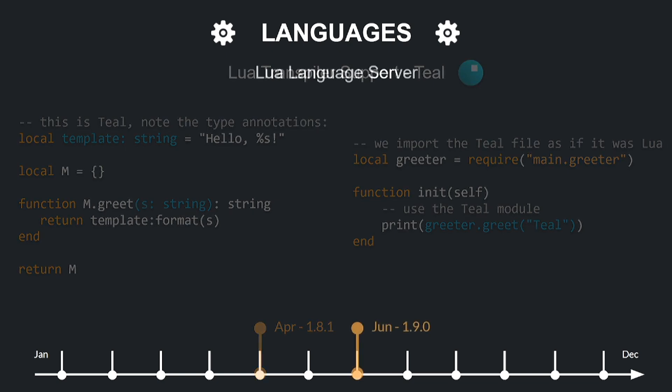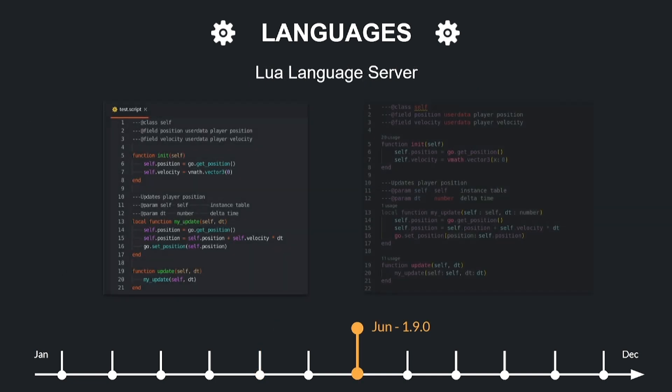The introduced Lua language server allows you to write Lua annotations in comments that can check types in the editor. This is also supported if you are using VS Code to write game code, and it's a very nice feature. In 1.9.0, they bundled the Lua language server directly into the Default editor, providing features such as linting and syntax checking and eliminating the need to use the LSP extension separately. There is also a community annotations extension for Tial as well.